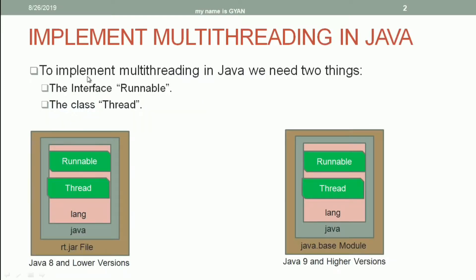To implement multithreading in Java, we need two things. The first one is the interface whose name is Runnable, and the second one is a class whose name is Thread. The class Thread implements the interface Runnable.